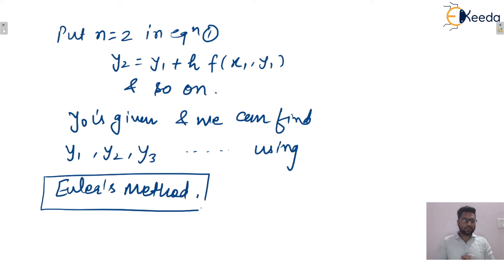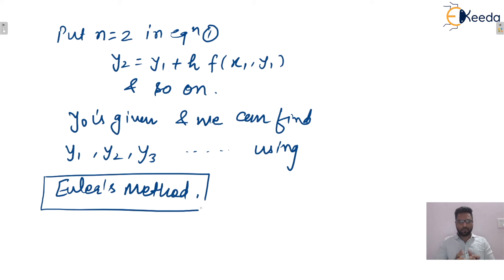Euler's method gives an approximate solution of ordinary differential equations. If the number of intervals is more, we get a more correct approximate value. If the number of intervals is less, the approximate value will not be as accurate. In the next lecture, we will see some problems based on Euler's method. Thank you so much.